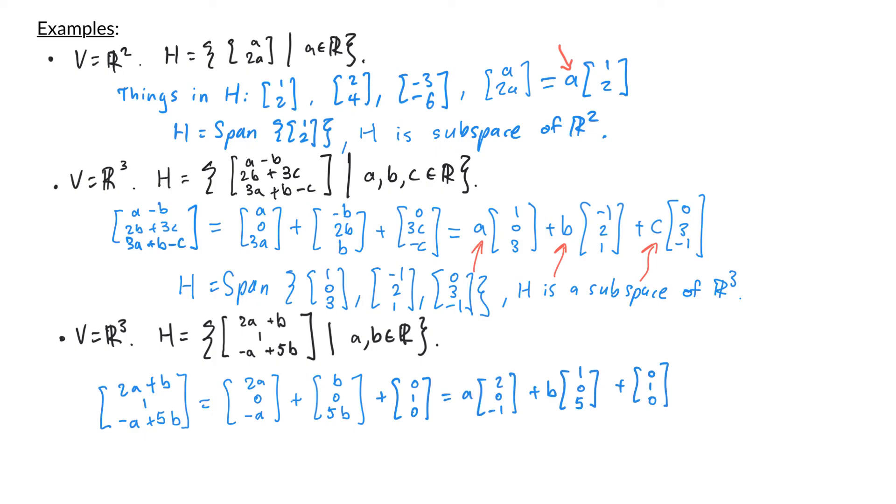Now you might think that we can write h as the span of 2, 0, negative 1, 1, 0, 5, and 0, 1, 0 but that's not quite right. We can't get every linear combinations of these three vectors. The weight for the vector 0, 1, 0 is always stuck at 1 so we don't have any other scalar multiples of it. Therefore h cannot be written as a span of vectors. In fact h is not a subspace of r3 because the middle entry is always 1 so the 0 vector is not in h. So again h is not a subspace of r3.